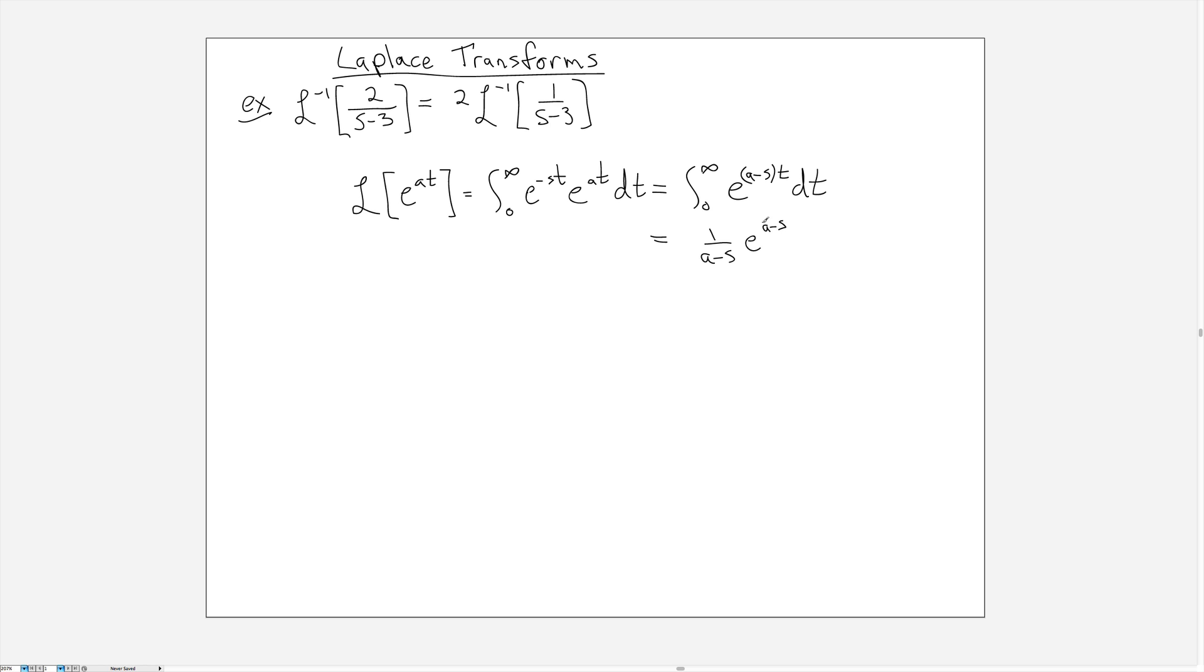The antiderivative of that is going to be 1 over a minus s, e to the a minus s times t, evaluated from 0 to infinity. Remember that these upper and lower limits are replacing the t variable. First, we have a constraint on a, or rather on s depending on what a is. In order for the upper limit to converge, we need this to be a negative number.